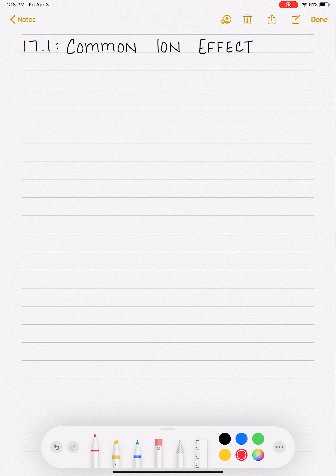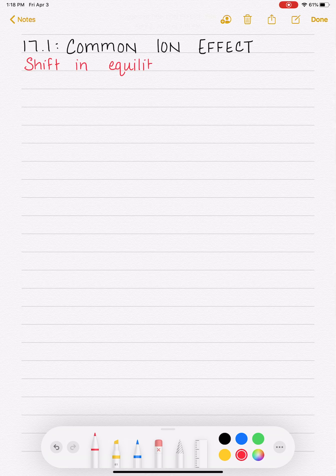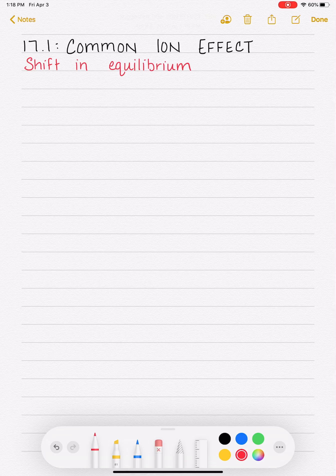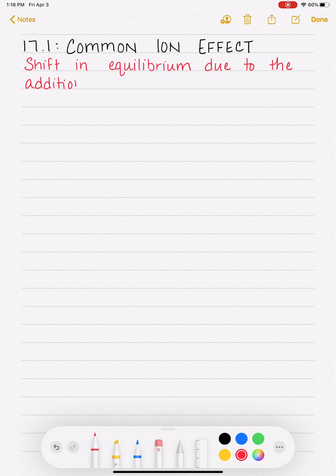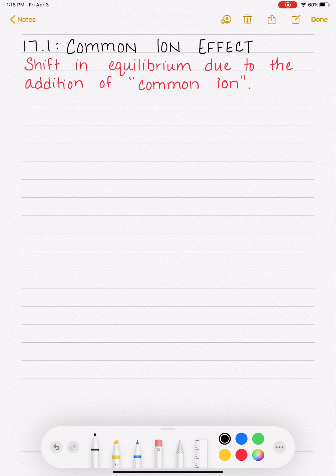We're going to define the common ion effect as being a shift in equilibrium. Remember, we've talked about this for a while now - position of equilibrium, shifting to the left or shifting to the right, Le Chatelier's principle. A shift in equilibrium that is due to the addition of what we're going to call a common ion. Common, not as in everyday or regular, but common as in having something in common with something else.